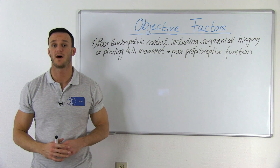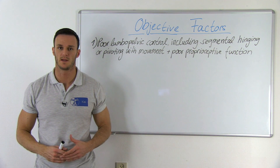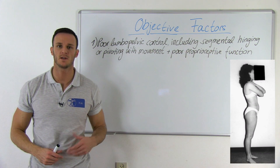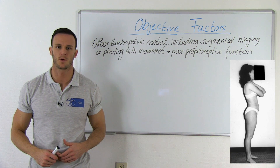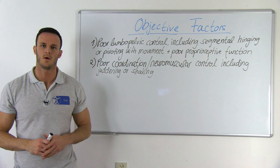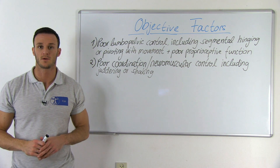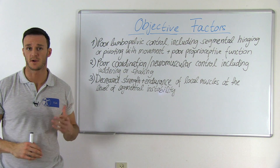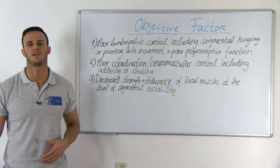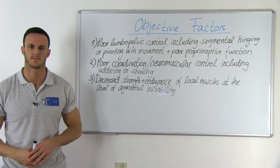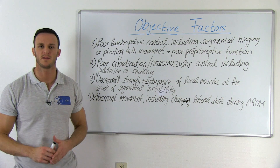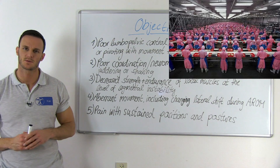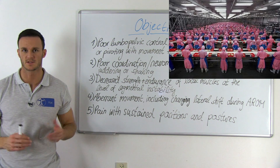Now let's look at the top five objective factors in clinical lumbar instability. Number one is poor lumbopelvic control, including segmental hinging or pivoting with movement as well as poor proprioceptive function. Number two: poor coordination or neuromuscular control, including juddering or shaking. Number three: decreased strength and endurance of local muscles at the level of the segmental instability. Number four: aberrant movement, including changing lateral shift during lumbar active range of motion. And number five: pain with sustained positions and postures.